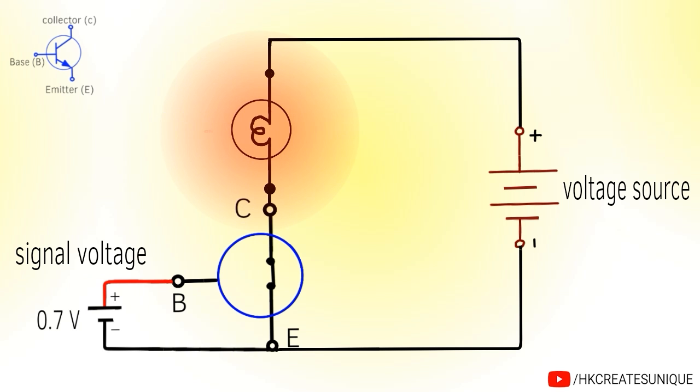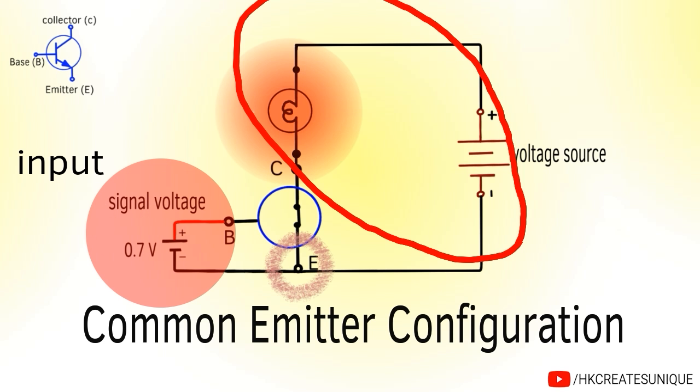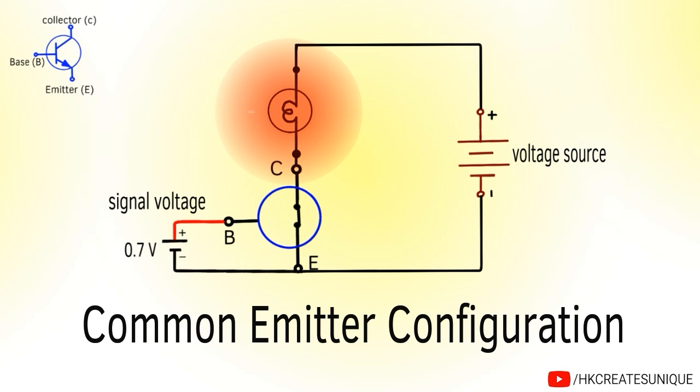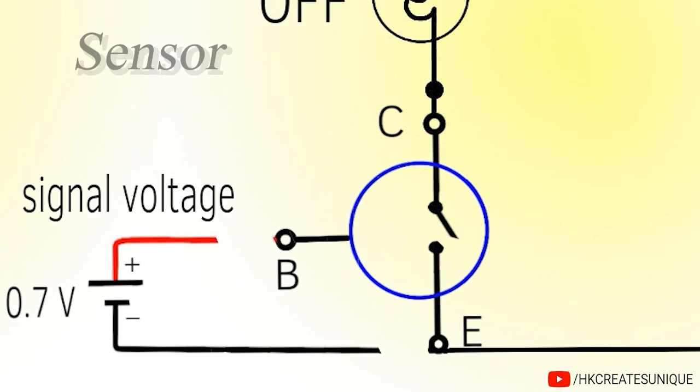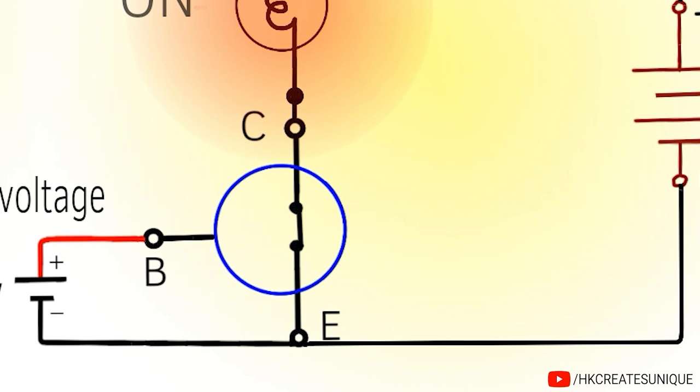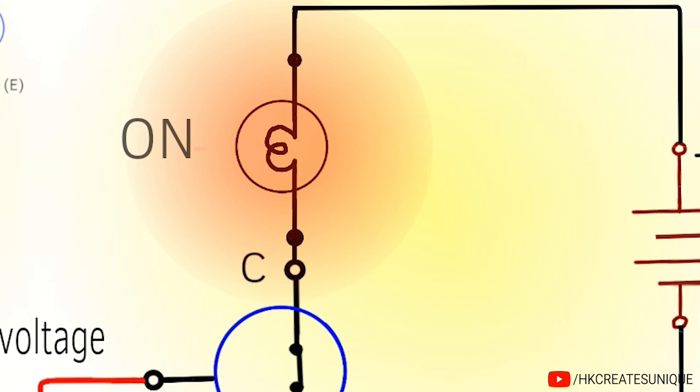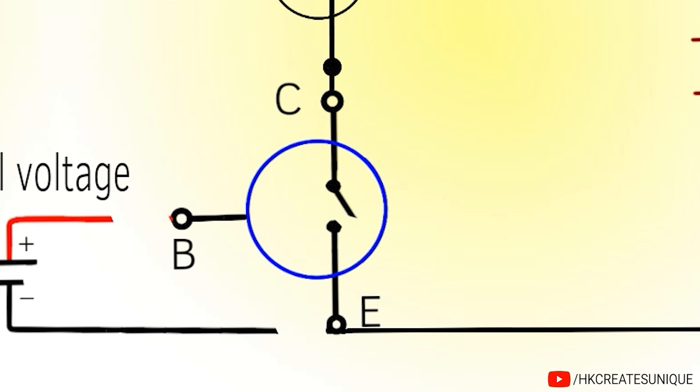This configuration of transistor is called common emitter configuration because the emitter is common to both input and output. This way when a signal voltage is applied between base and emitter, for example from a sensor in a specific project, the transistor acts as a closed switch and allows current to flow through the load. When voltage at the base is removed, the transistor acts as open switch and hence it is off.